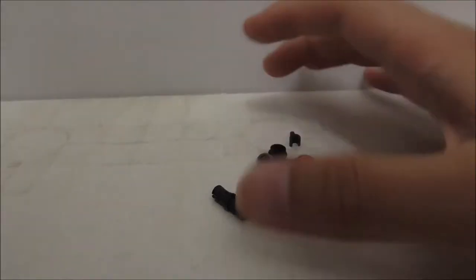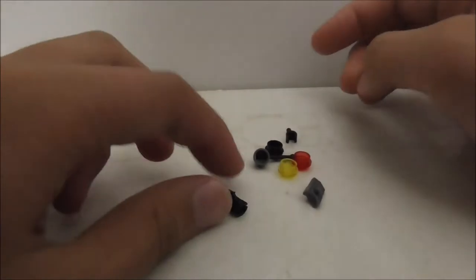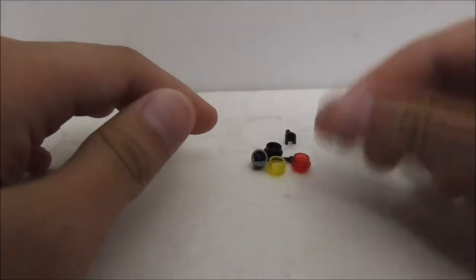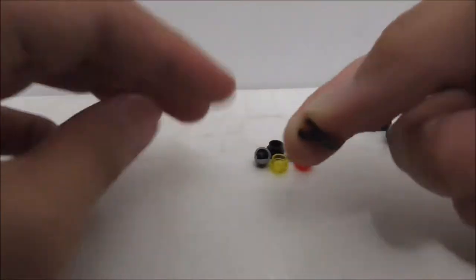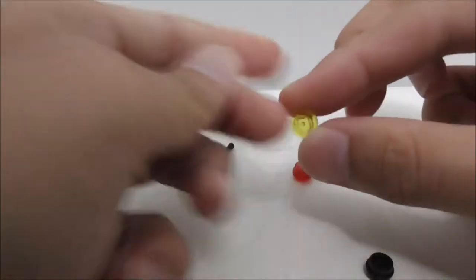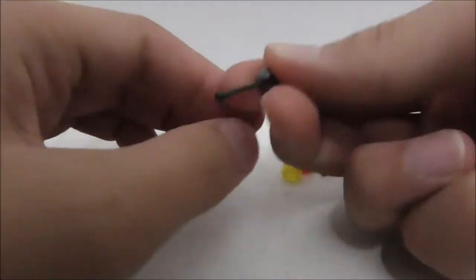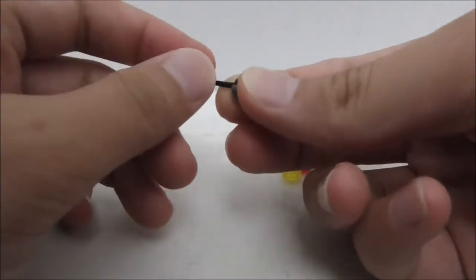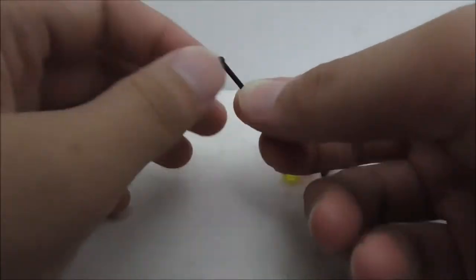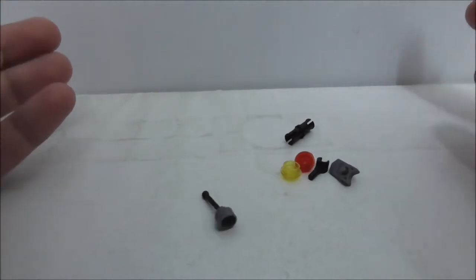So these are all of the extra pieces included in the set here. It comes with this connector piece, a stud shooter piece, extra hand, three of these studs in yellow, red and black, and also this lever piece which is definitely nice to get an extra of.